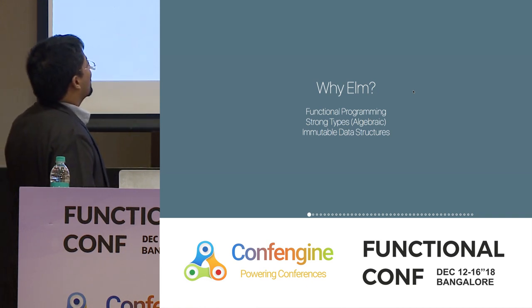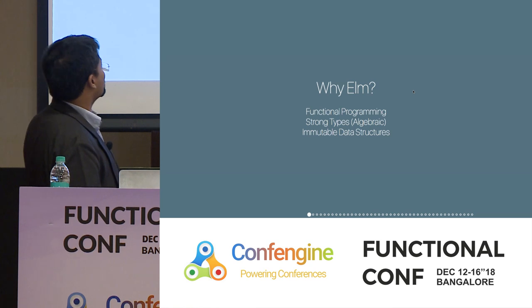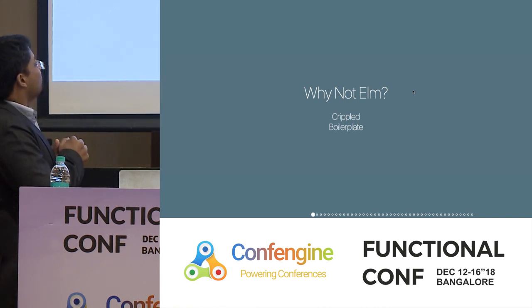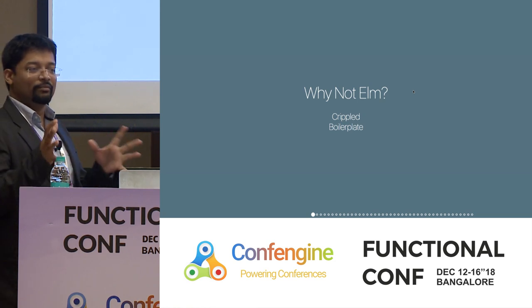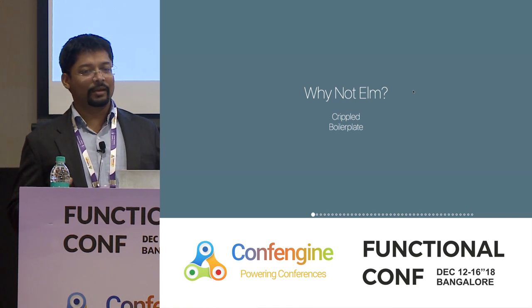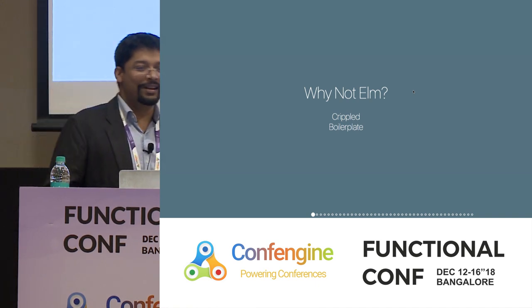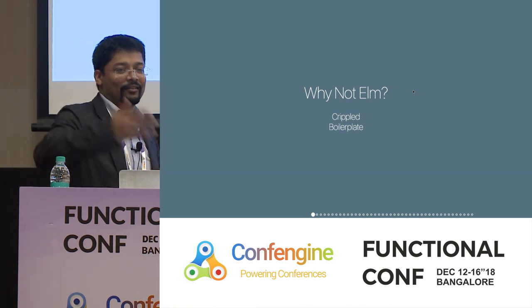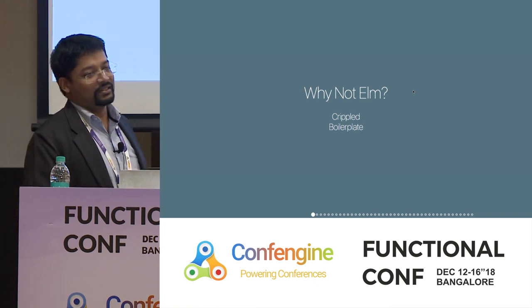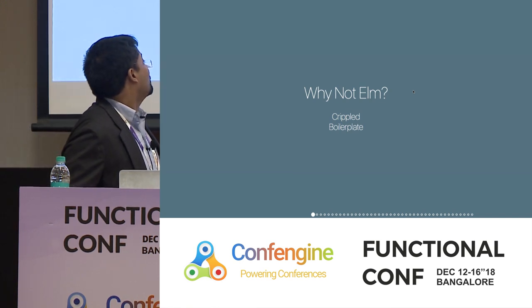Concur is based on functional programming languages with strong types, algebraic data types, and immutable data structures. Some problems with Elm are that it's crippled — it's a functional language but lacks better parts like type classes and monads, which you run into quickly. It doesn't scale for complex applications because of the boilerplate required to work around those missing features. The state monad is great for managing state and Elm can't use it, but Concur allows it.